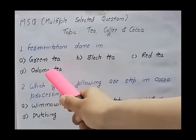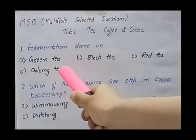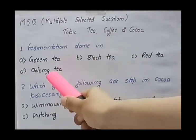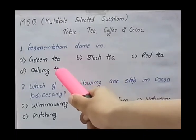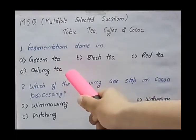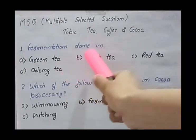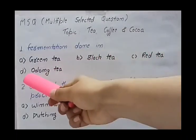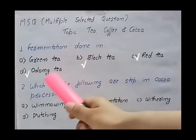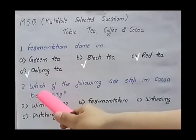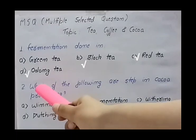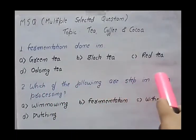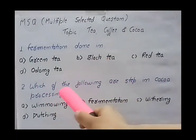Fourth option is oolong tea — yes, in oolong tea partial fermentation is done. So the right options are black tea, red tea, and oolong tea. Moving to the next question: which of the following are steps in cocoa processing? The options given are winnowing, fermentation, withering, and dutching.